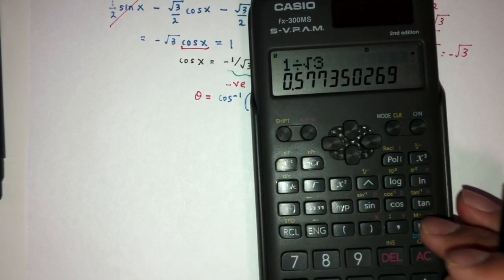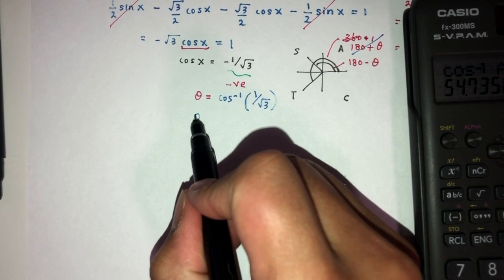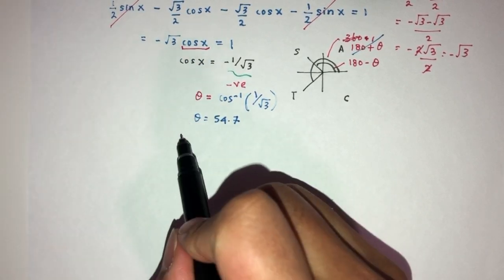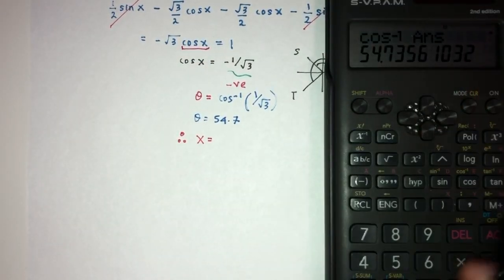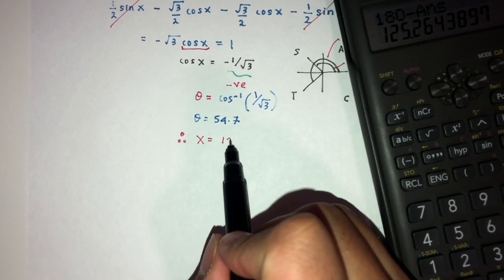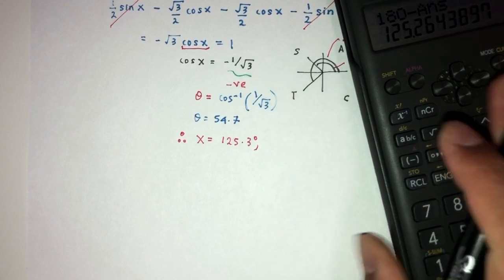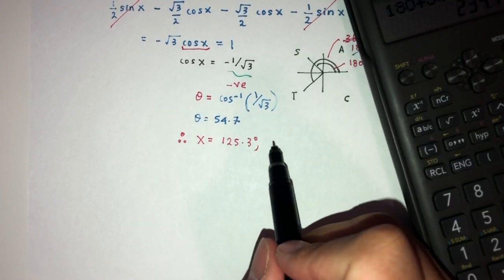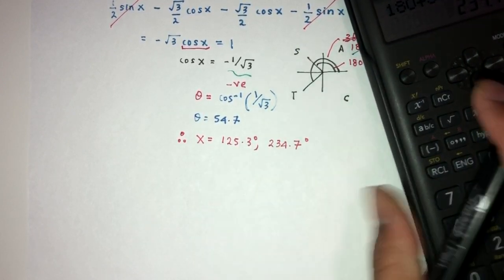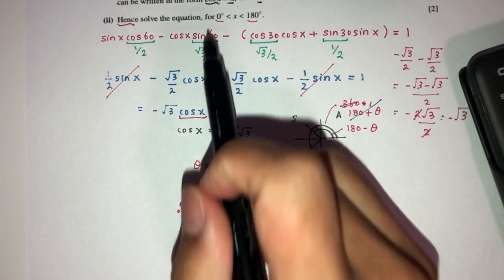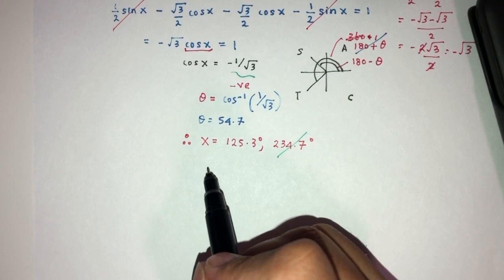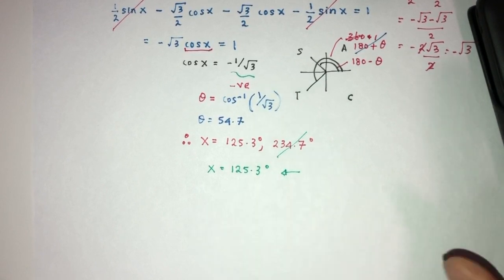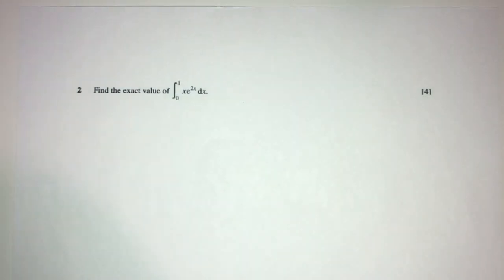Computing: theta = cos⁻¹(1/√3) ≈ 54.7°. Then x = 180° − 54.7° = 125.3°. The other candidate, 180° + 54.7° = 234.7°, is outside the domain [0°, 180°] so we reject it. Therefore x = 125.3°. This completes question number one.